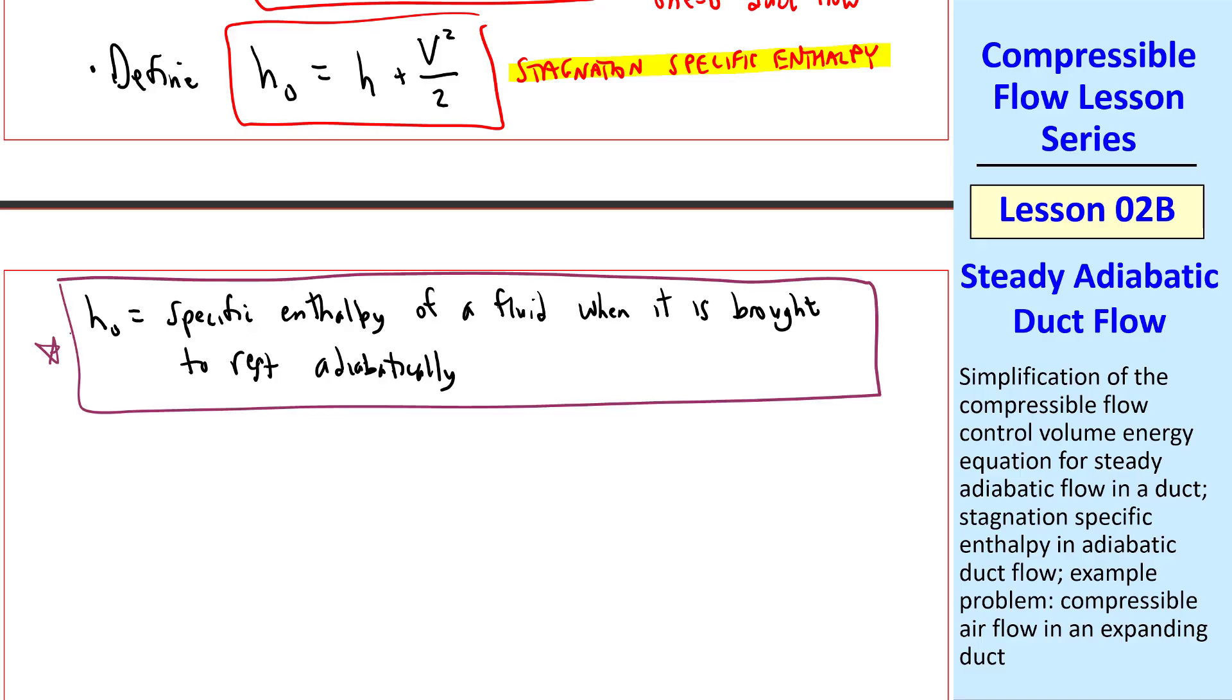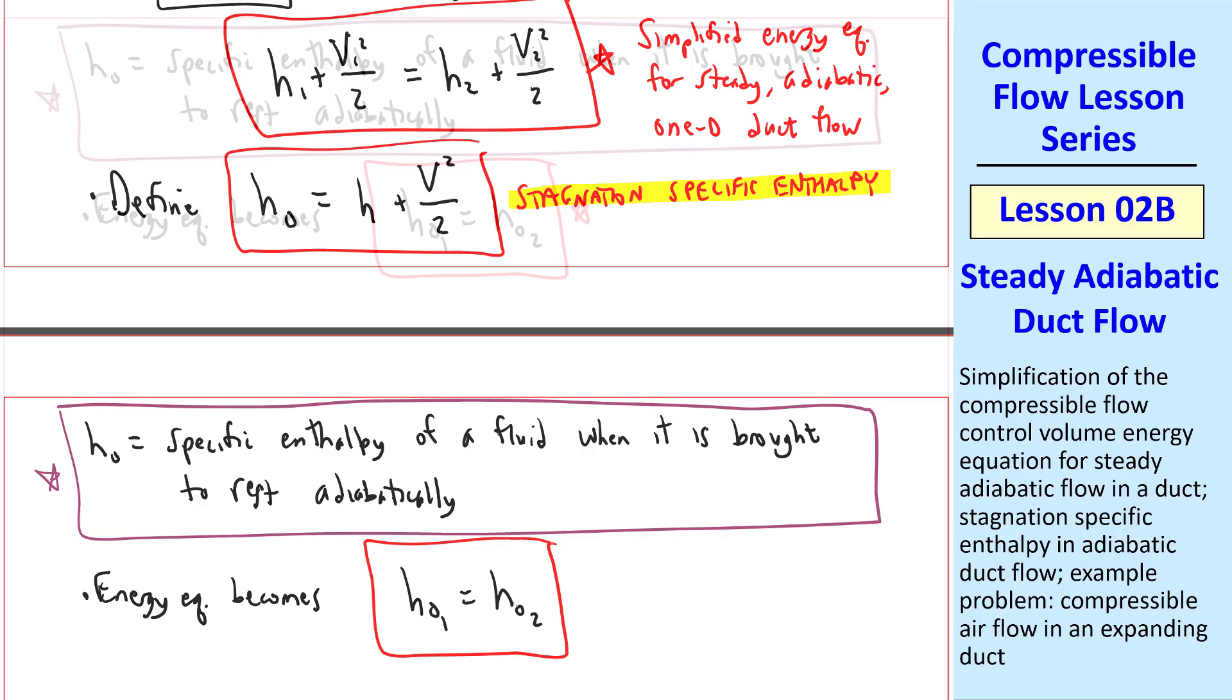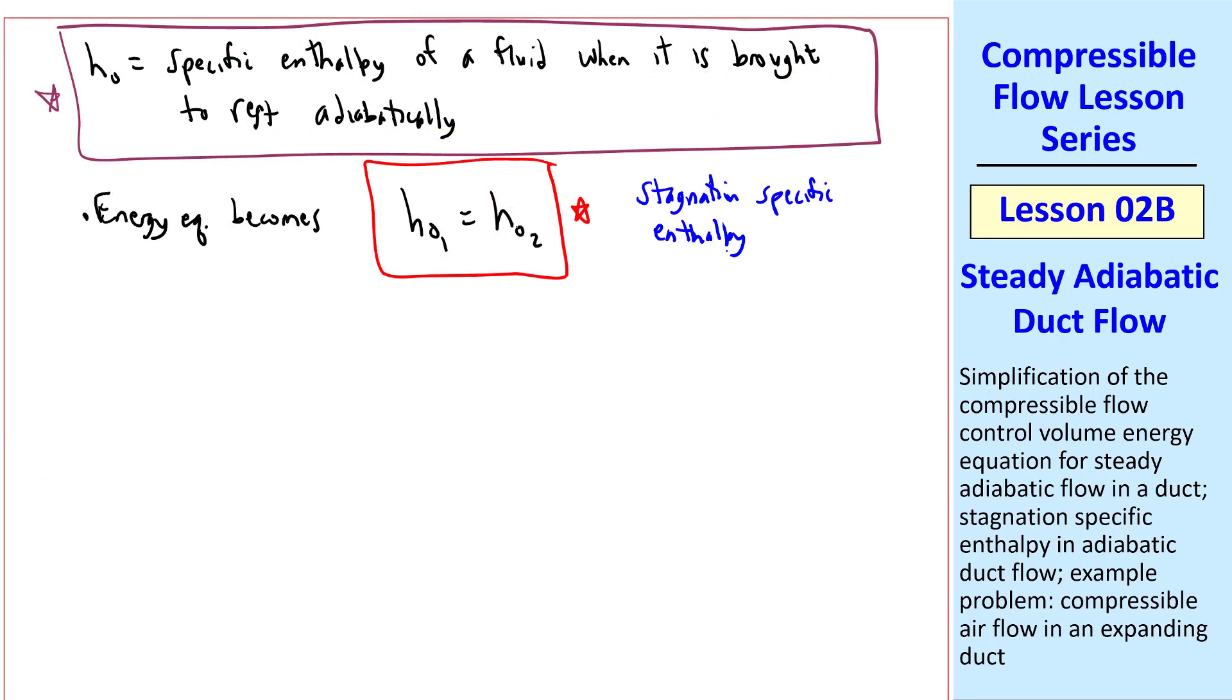This is our definition, and here we are talking about adiabatic flow. And since we can write these terms as h0 on both sides, this equation becomes h0 1 equal h0 2. In other words, stagnation-specific enthalpy remains constant in steady adiabatic duct flow.